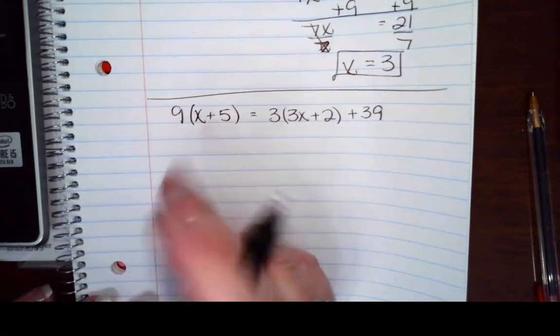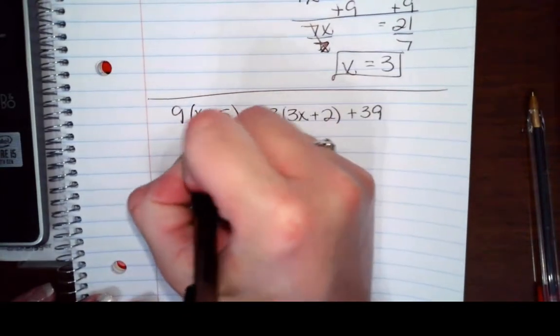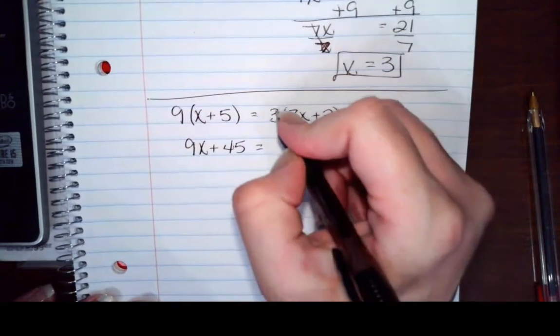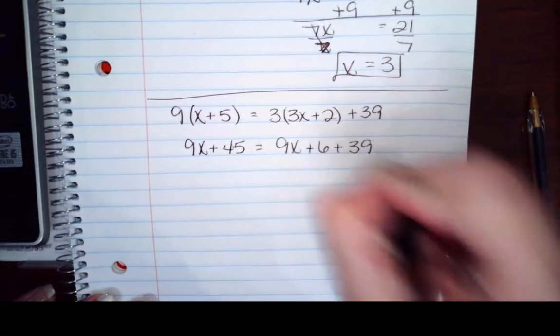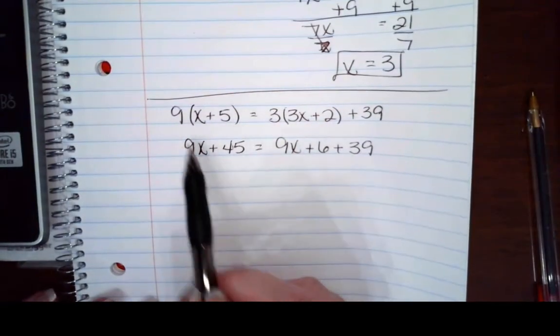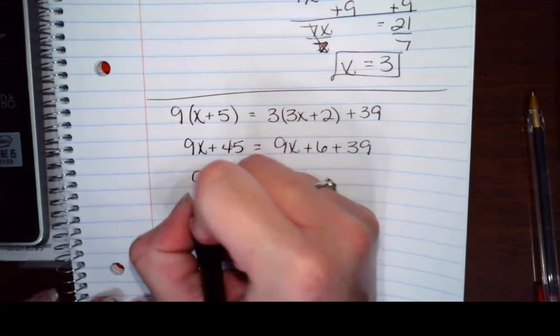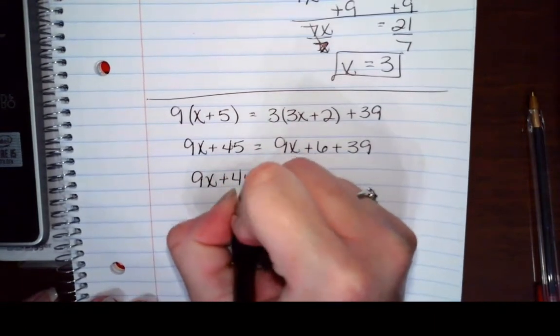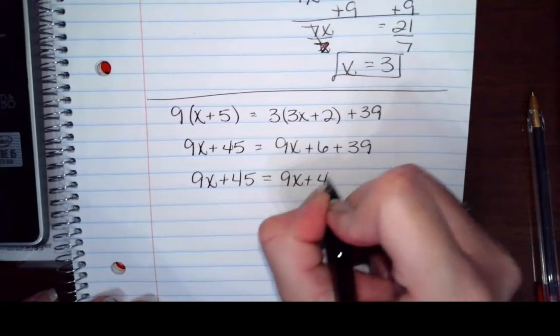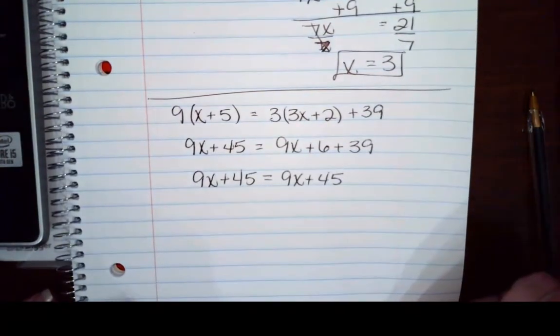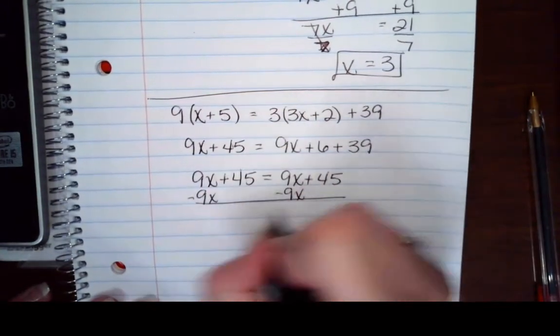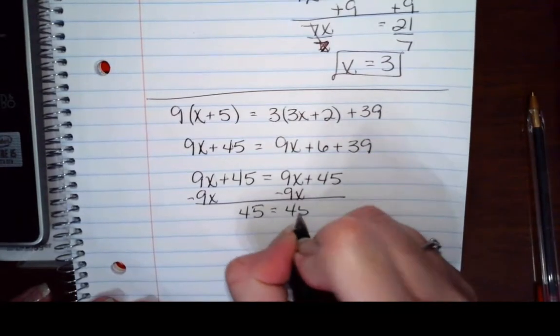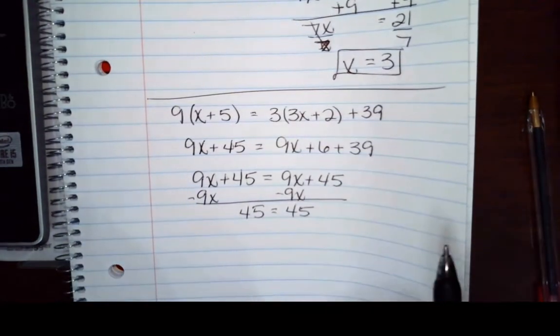I've got organizing to do on both sides. I'm going to distribute over here, so 9x plus 45. Distribute over here, I get 9x plus 6 plus 39. My left side is already organized. My right side, I need to combine like terms. So I've got 9x plus 45 equals 9x plus 45. And hopefully you're noticing something right now. Let's go ahead and try and get our x's organized. My x's fall off and I'm left with 45 equals 45. Well, is that true? Yes, it is.